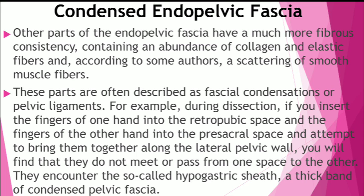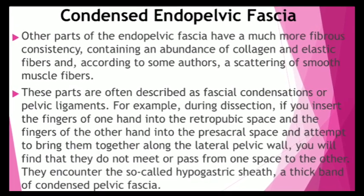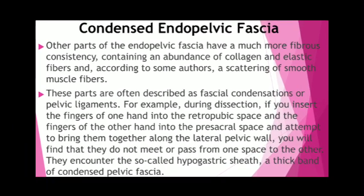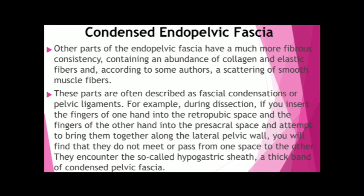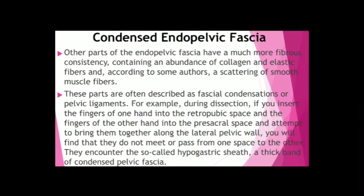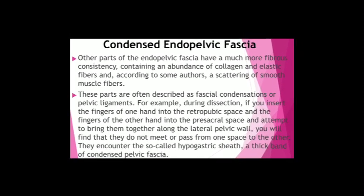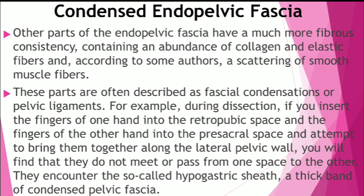They encounter what we call the hypogastric sheet, which is a thick band of condensed pelvic fascia. This fascial condensation is not just a barrier separating two potential spaces — it also serves as a passageway for blood vessels and nerves passing from the lateral wall of the pelvis to the pelvic viscera, along with the ureters in the male, as well as the vas deferens. This condensed endopelvic fascia extends immediately from the lateral wall.